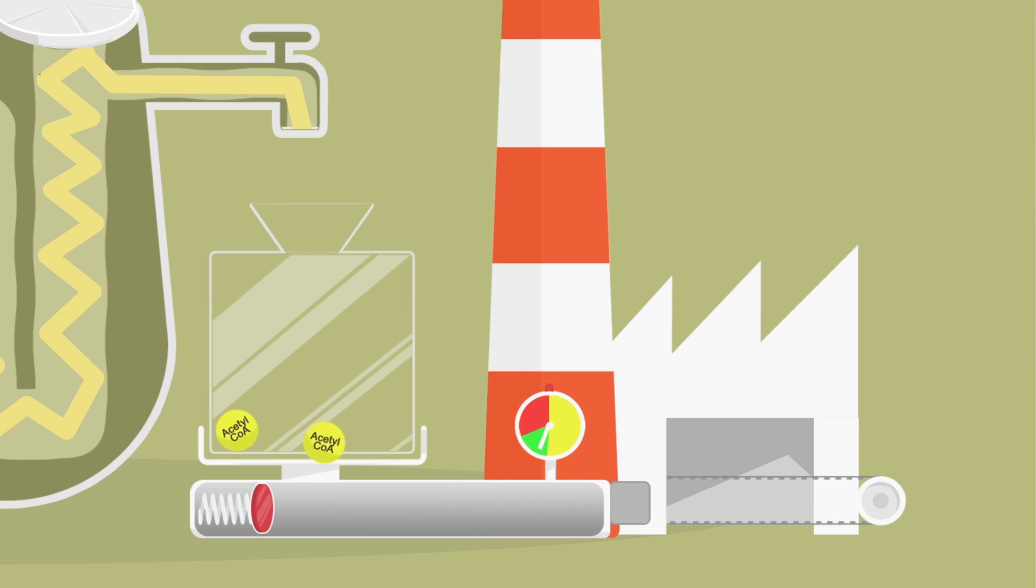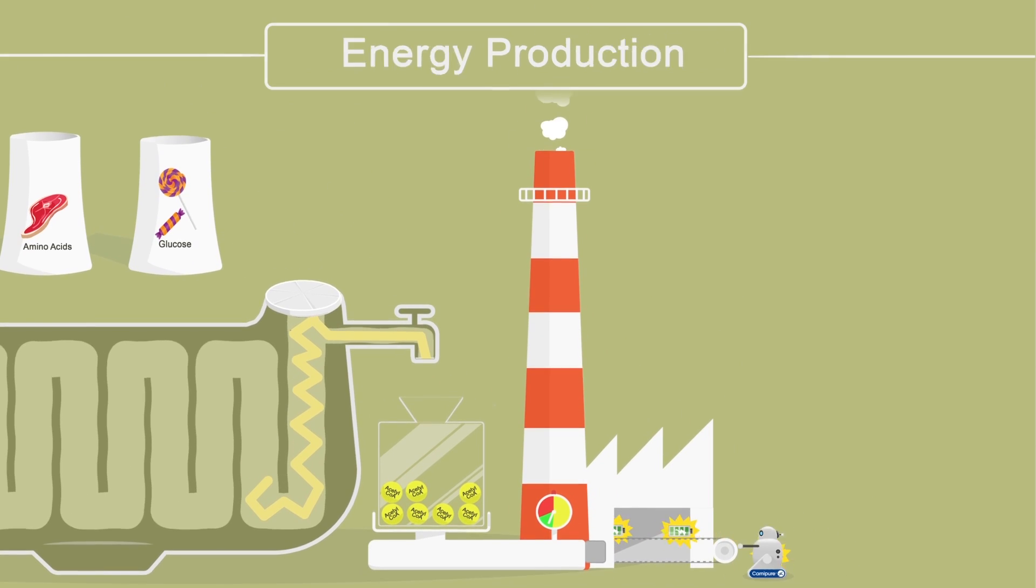The breaking down of fatty acids releases acetyl-CoA, which enters the Krebs cycle. The Krebs cycle is a series of chemical reactions to generate ATP, a form of energy.